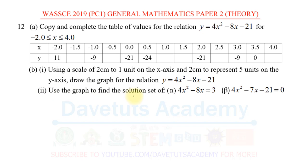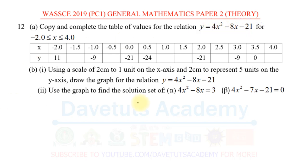We are to use the graph to find the solution set of two given equations. The key point is that we use the same graph plotted for y = 4x² - 8x - 21 to solve those two equations. Let me clarify how we do that before going ahead to populate the table, because the same graph will be used to find the solution for both equations we are given.